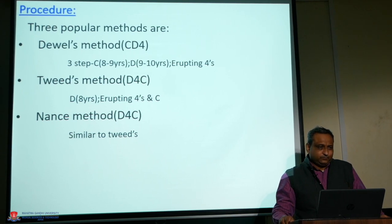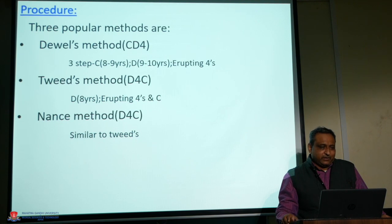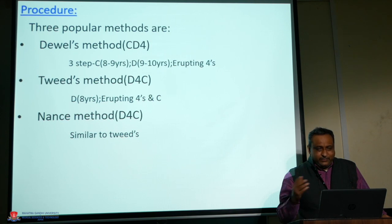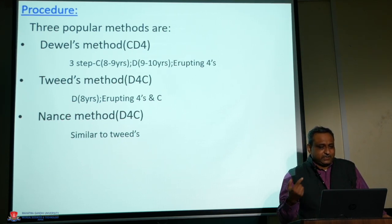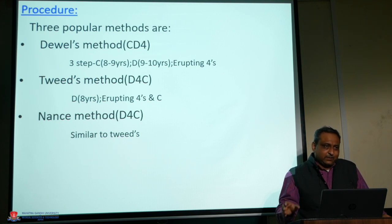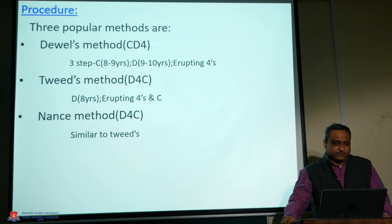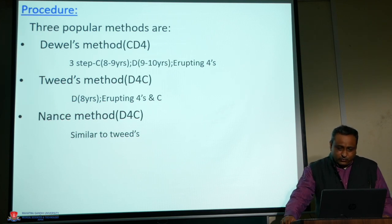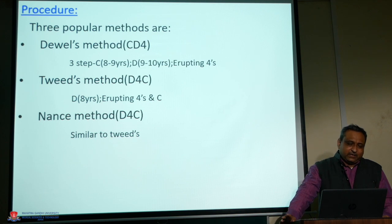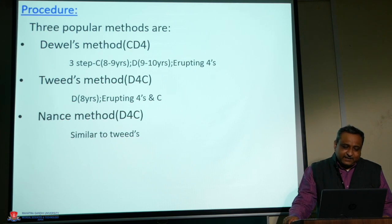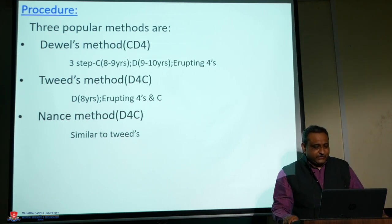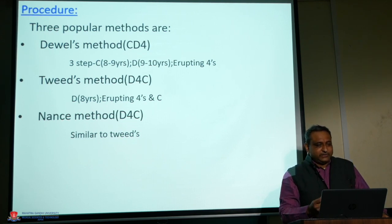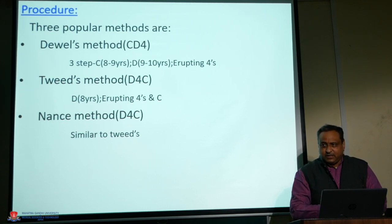By extracting C at age 8–9, you relax anterior crowding, and that space is occupied by the anterior teeth. Then D is extracted, and subsequently the first permanent premolars (4) are extracted, utilizing space in the posterior segment so posterior teeth come into comfortable position. In Tweed's method, the posterior segment is addressed first (D then 4), followed by the anterior (C). Nance similarly addresses D and 4 first, then C. The detailed execution of these three methods will be covered in the next lecture.